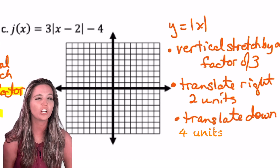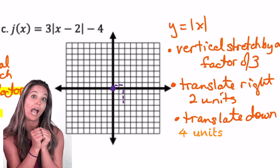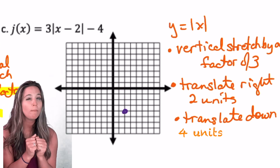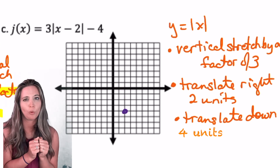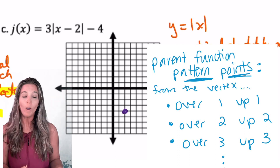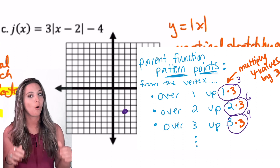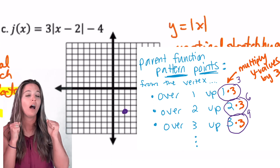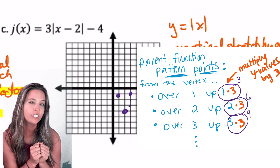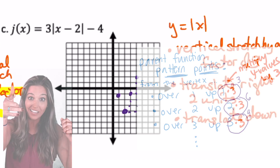To start graphing, we're going to move the vertex first. From zero, zero, we move to the right two and down four. Now from the vertex I can use my pattern points. Over one, up one — wait, I'm multiplying the y values by three. So from my vertex, over one, up one times three is three. Back to my vertex, over two, up two times three is six.